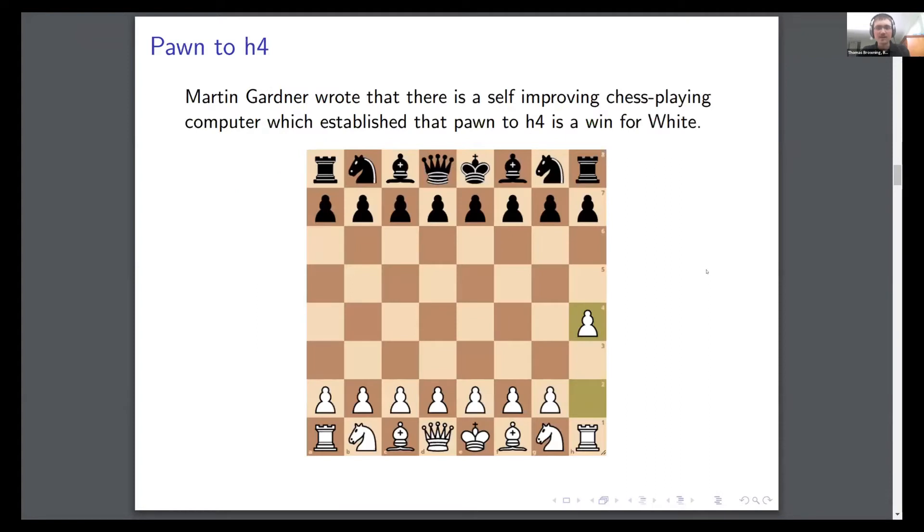The third one - Martin Gardner claimed there was this self-playing computer program that played itself many times, got really good at chess, and managed to establish that this first move in chess is a win for the first player. If you know anything about chess, this is actually an awful move. It does nothing you want to do, doesn't control the center or develop your pieces.